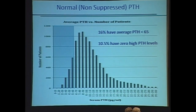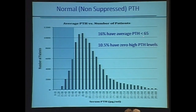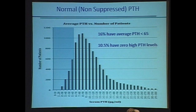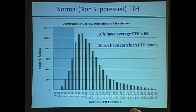They have the same parathyroid tumor — they are no different. 16% have an average parathyroid hormone level of 65 or less — normal PTH on the intact PTH assay. Over 1,000 patients in this database of 10,000 have never had a PTH over 65. They still have a parathyroid tumor because their calcium is 11.2 and their PTH is 52 or 45 — that's inappropriate, and that's a parathyroid tumor. You don't need a high PTH to have the diagnosis of primary parathyroidism.